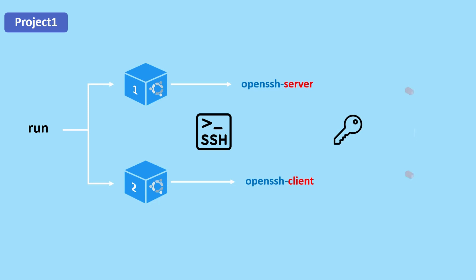The end result is two Ubuntu containers that can communicate with each other securely over SSH. The first key takeaway from this project is improved security. By setting up an SSH connection between the two containers you have established a secure and encrypted connection that ensures confidentiality, integrity, and authenticity of the data transmitted between them. This helps to protect your application and data from unauthorized access and data breaches.